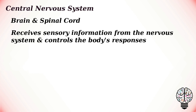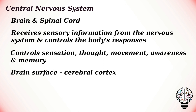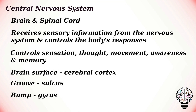The central nervous system has three main components: the brain, the spinal cord, and the neurons. The brain controls many of the body's functions including sensation, thought, movement, awareness, and memory.